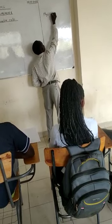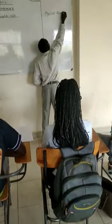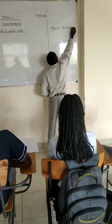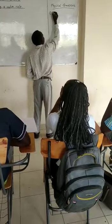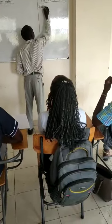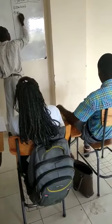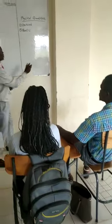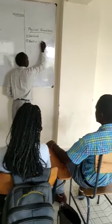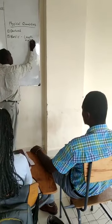Very good. And tell us, what did we learn in physical quantities? We learned that physical quantities are divided into two categories: derived physical quantities and basic physical quantities. Now, I want you to give me three examples of basic physical quantities. Just three examples. Length, mass, and light.